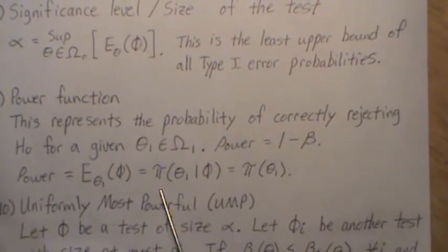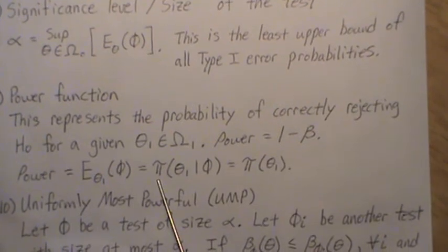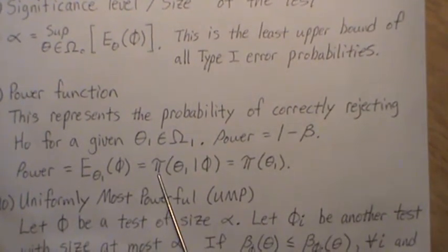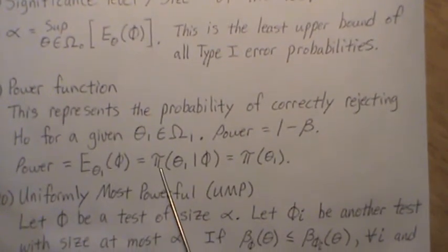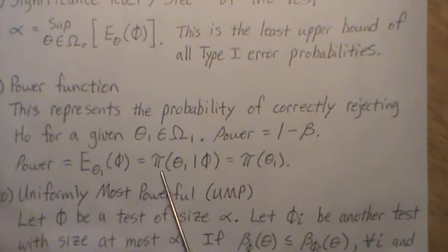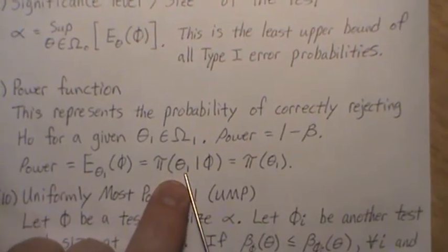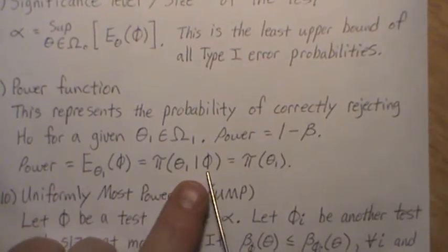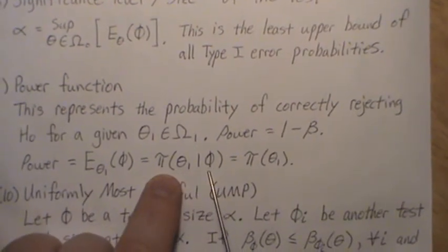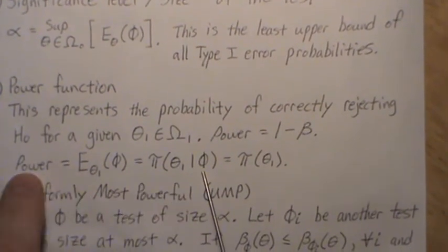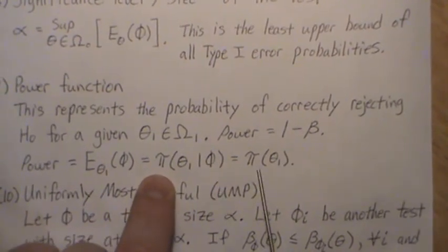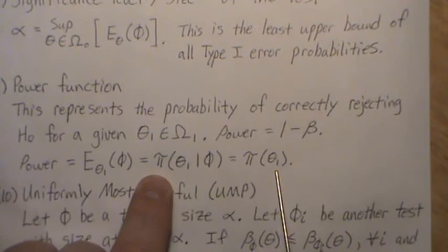We're going to introduce notation called pi. Pi deals with the probability of rejecting the null hypothesis, but you need additional information: what the true value of theta is, and what our test function is. Sometimes the test function is obvious, so you just say pi of theta.